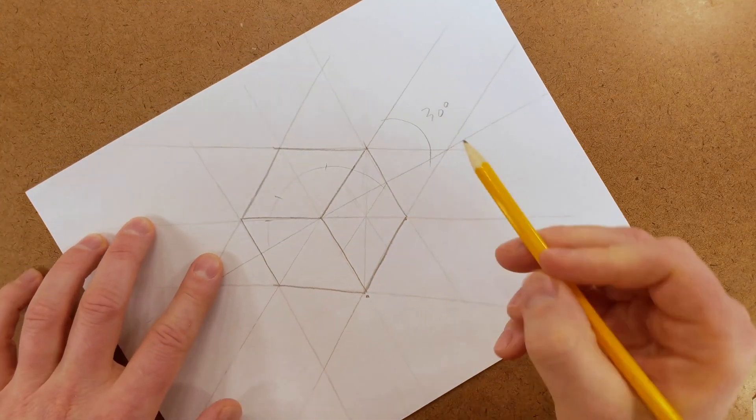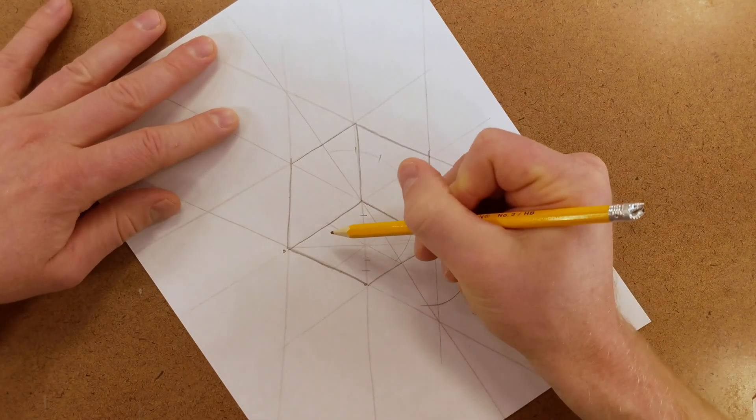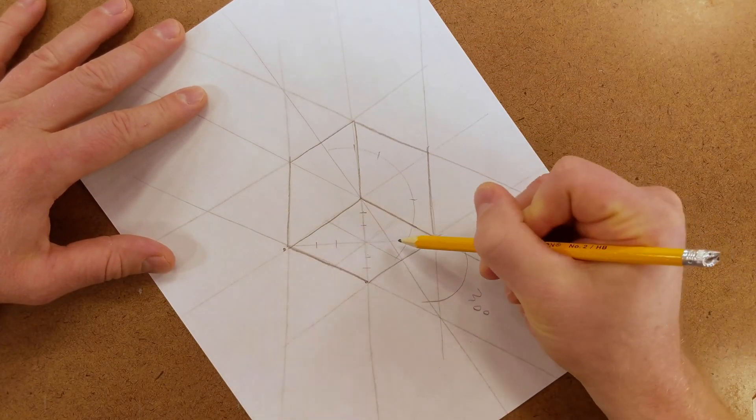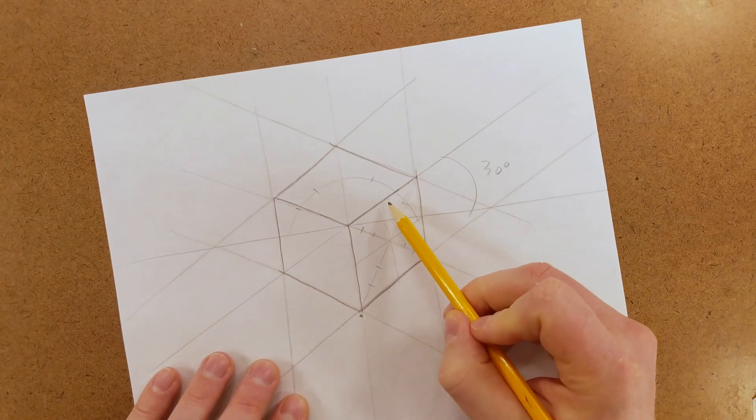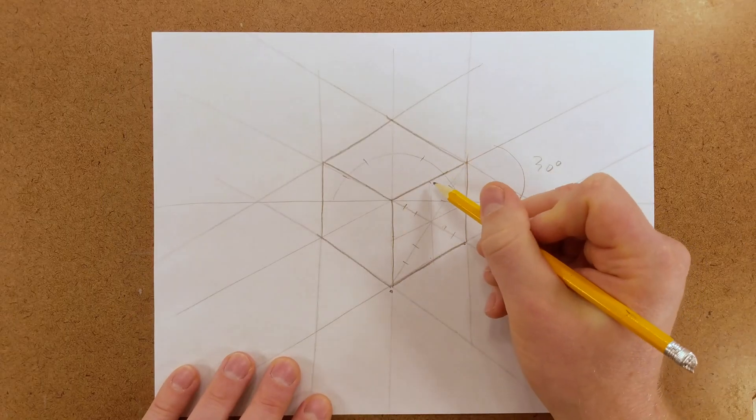On these diagonal lines, divide each of them into thirds. We know the circle will be tangent on each of these points, so we can connect the lines.